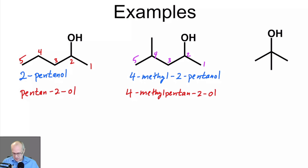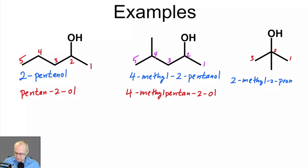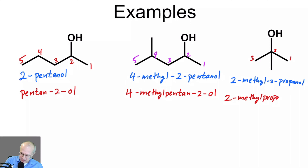Let's name this one. The longest continuous chain is 1, 2, 3. The old way, we would say 2-methyl-2-propanol. The new way, we would say 2-methylpropan-2-ol.